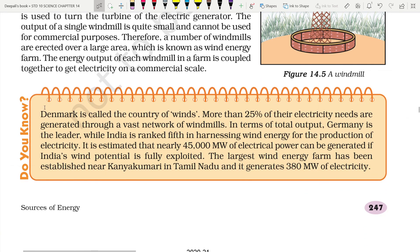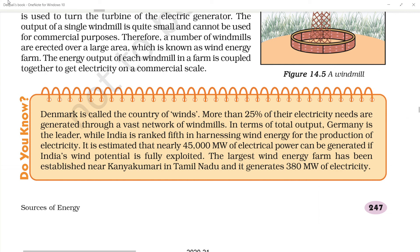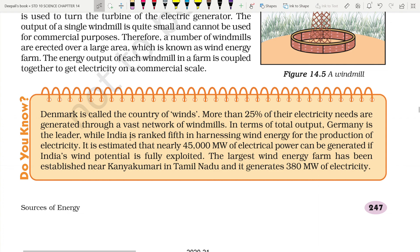There are large wind farms in Denmark, which is called the country of winds — more than 25% of their electricity needs are generated through windmills. In terms of total output, Germany is the leader, while India is ranked fifth in harnessing wind energy for electricity production. It is estimated that nearly 45,000 megawatts of electrical power can be generated if India's wind potential is fully exploited. The largest wind energy farm has been established near Kanyakumari in Tamil Nadu, generating 380 megawatts of electricity.